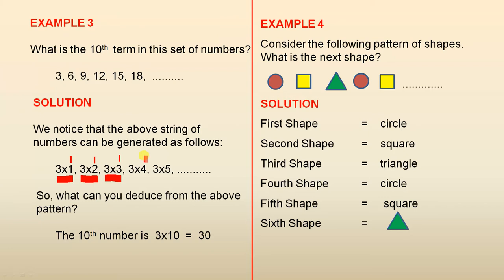So it makes sense that the 10th one, after we follow this pattern, is 3 times 10, and that must be 30. So what can you deduce from the above pattern? You notice that each number is 3 times whatever the number is. In other words, the first number, the second number, the third number, the fourth number, the fifth number is 3 times 5. So the 10th number must be 3 times 10, and that gives you 30.